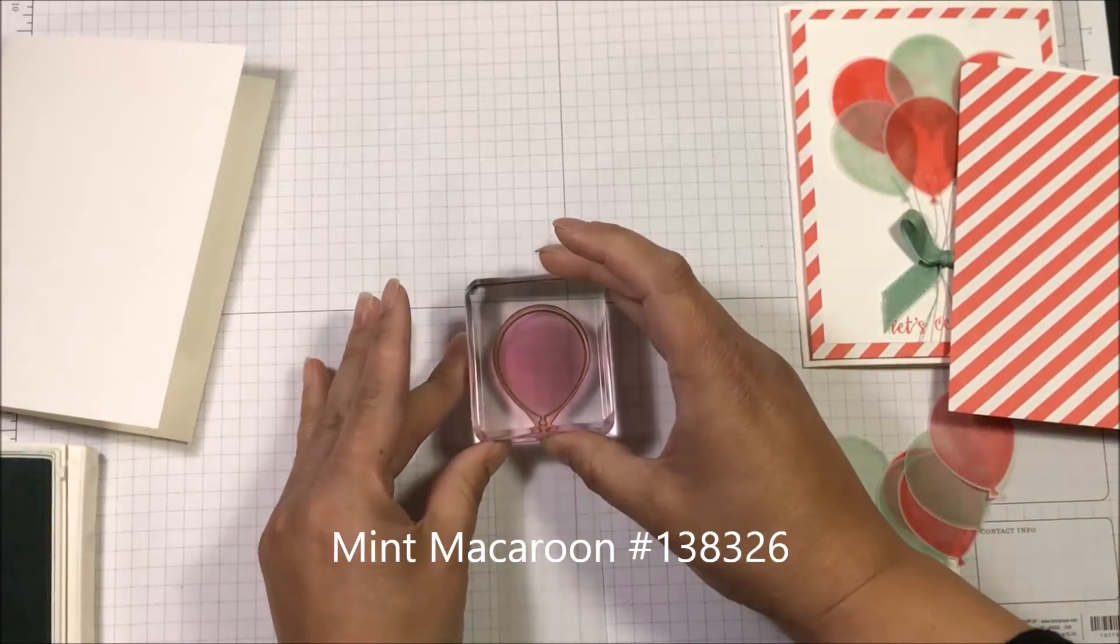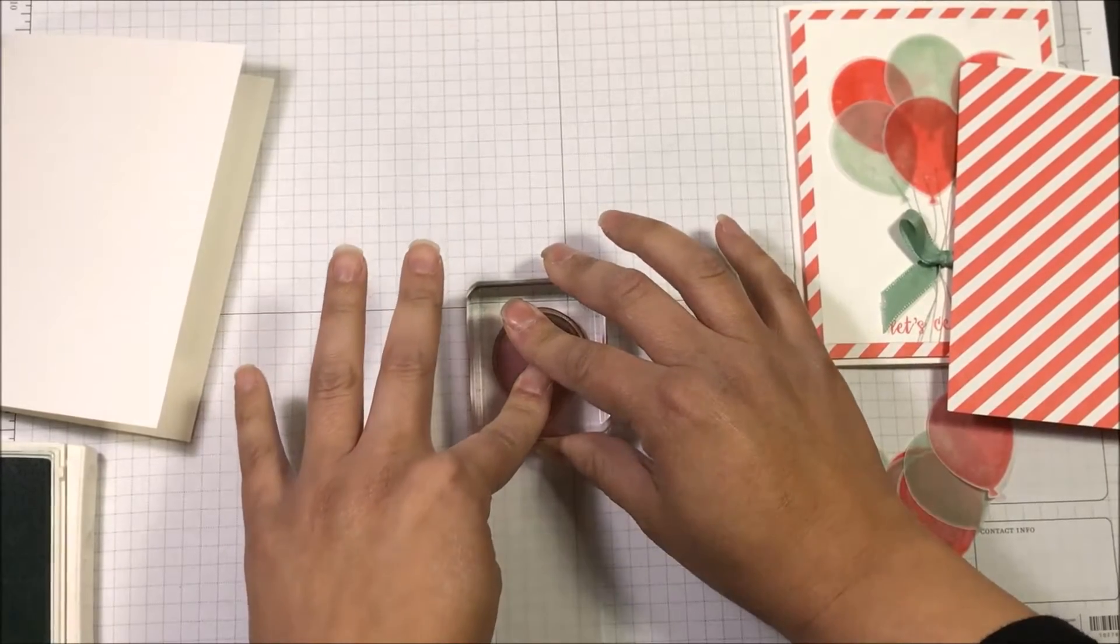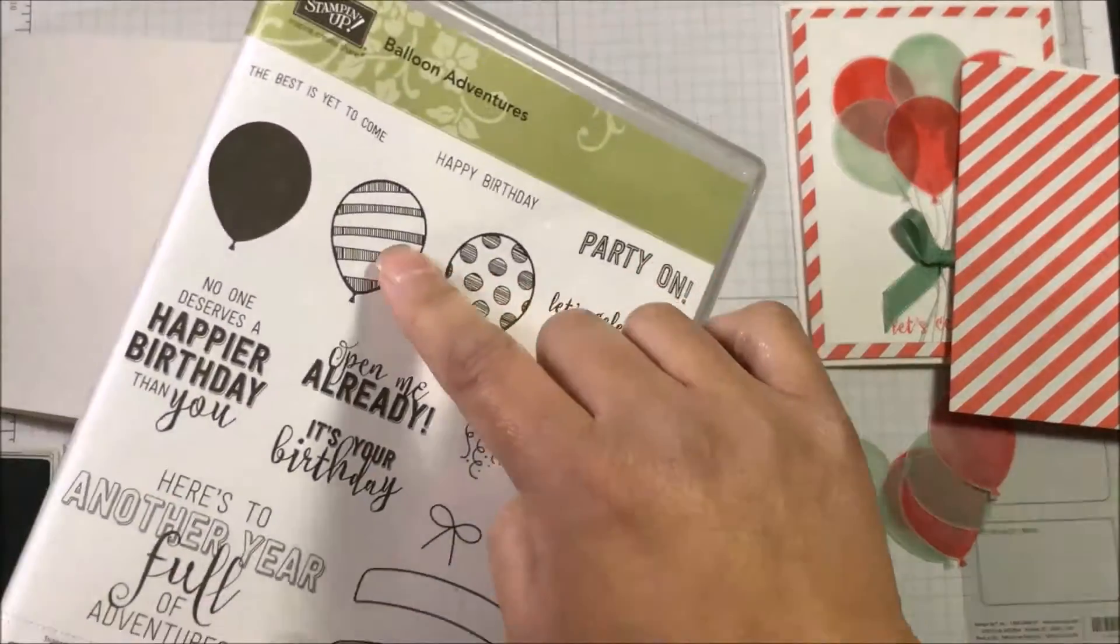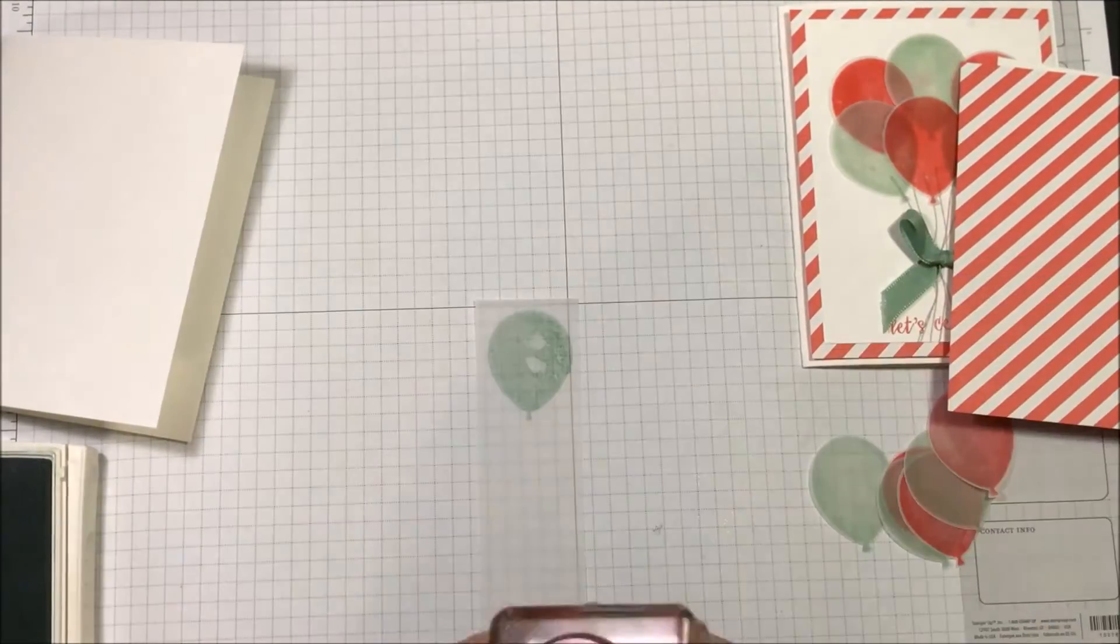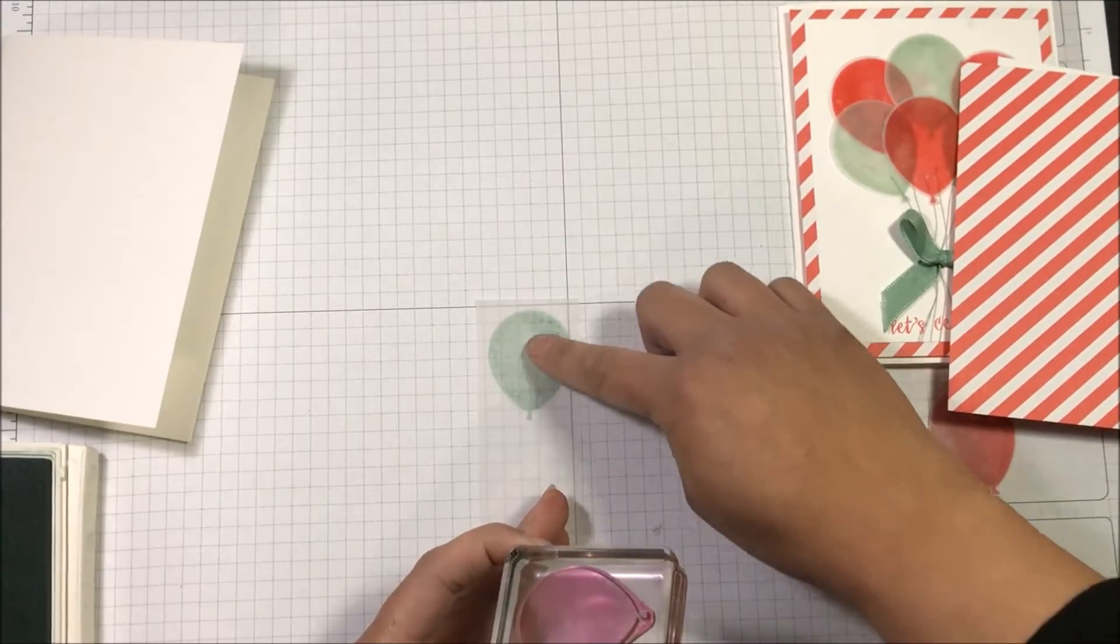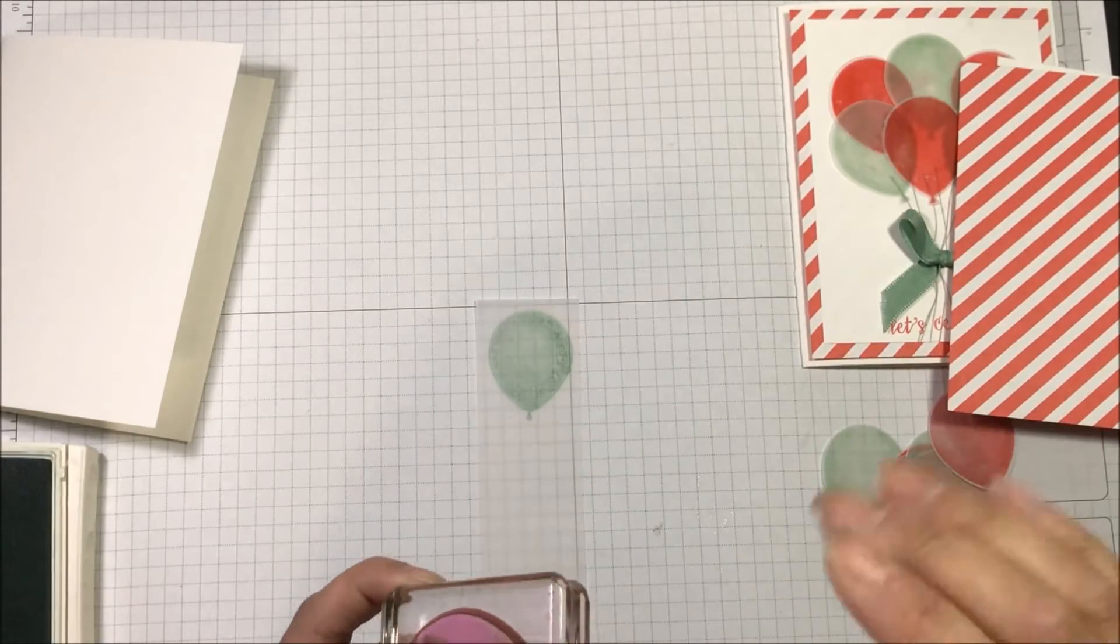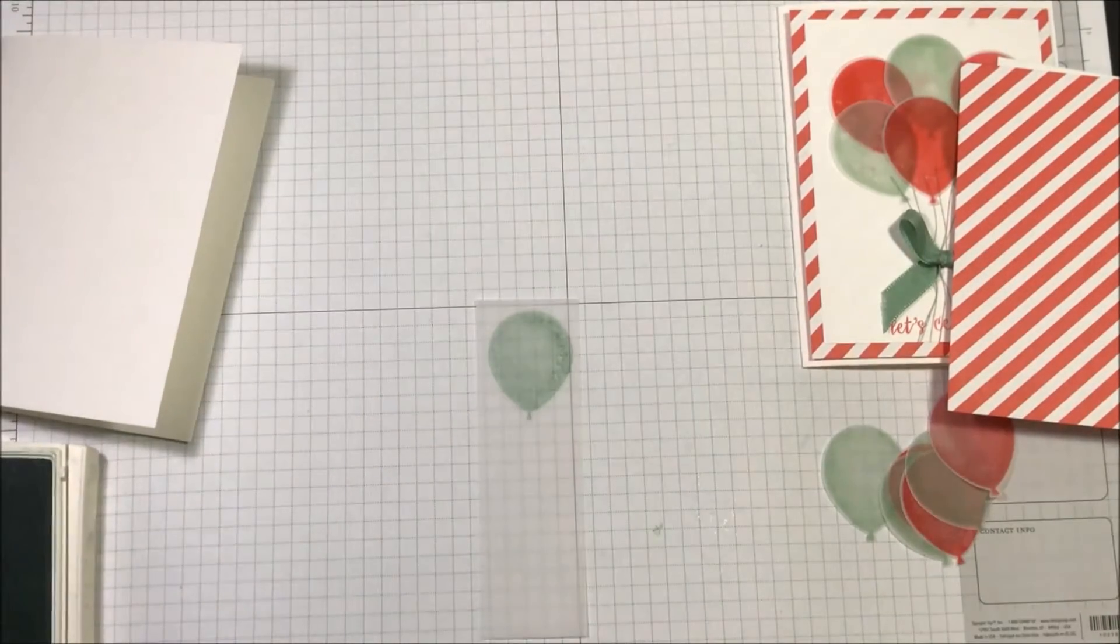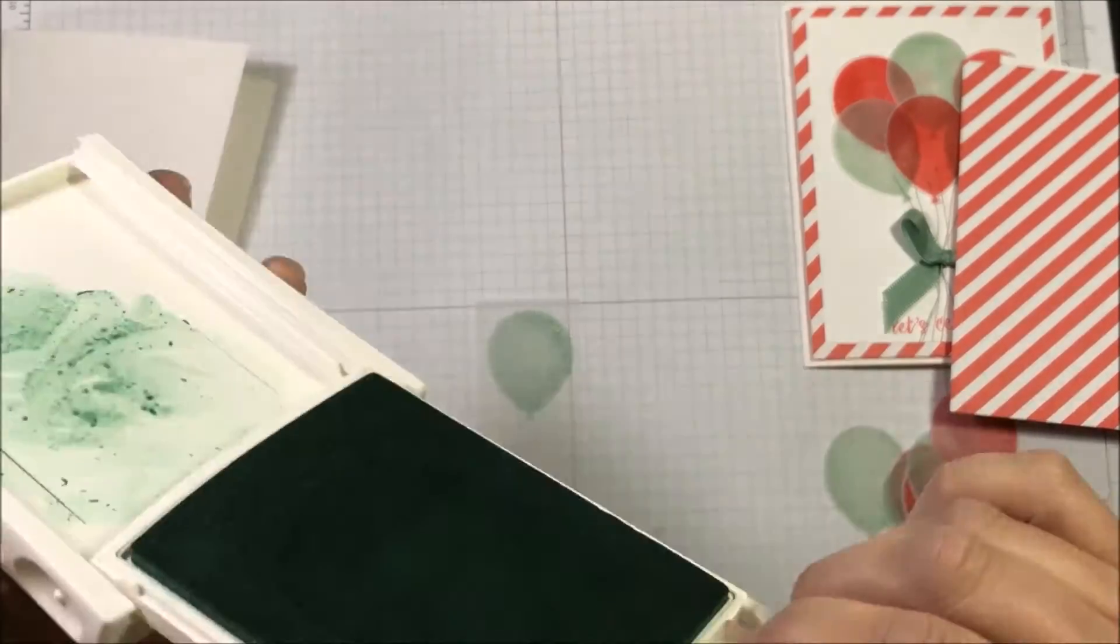So let me just grab mint macaroon real quick and just ink up my image. And then I'm going to just stamp it down. And you can see right there, I got a couple of spots where it didn't really blend well or soak in well. So I just take my finger and rub it in. That's just something I do. I'm going to clean this off.